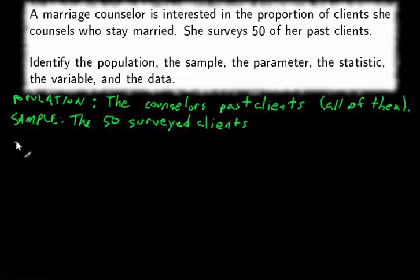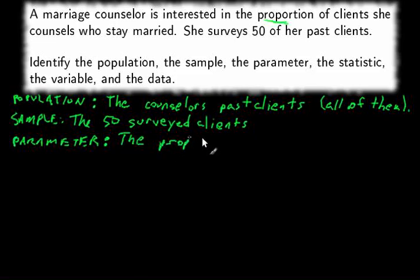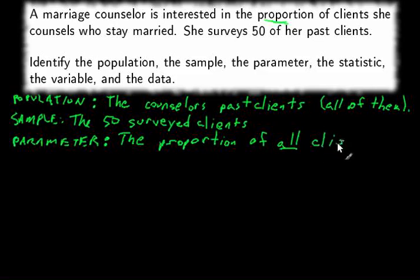The parameter is always a number regarding the population. In this case, we're talking about proportions — the proportion of clients who stay married. So the parameter is the proportion of all clients who stay married.